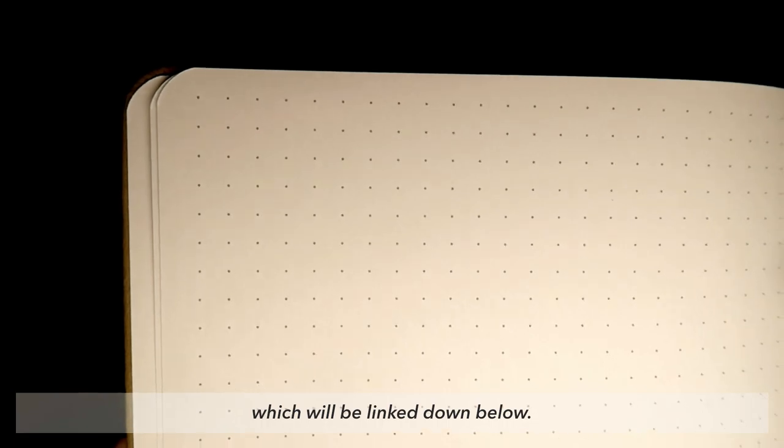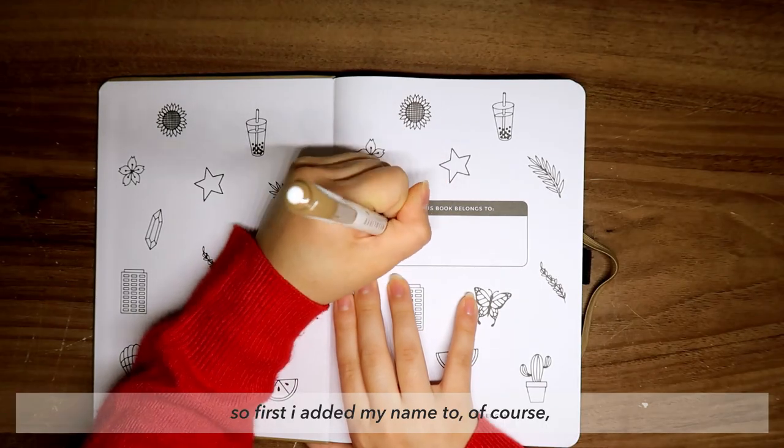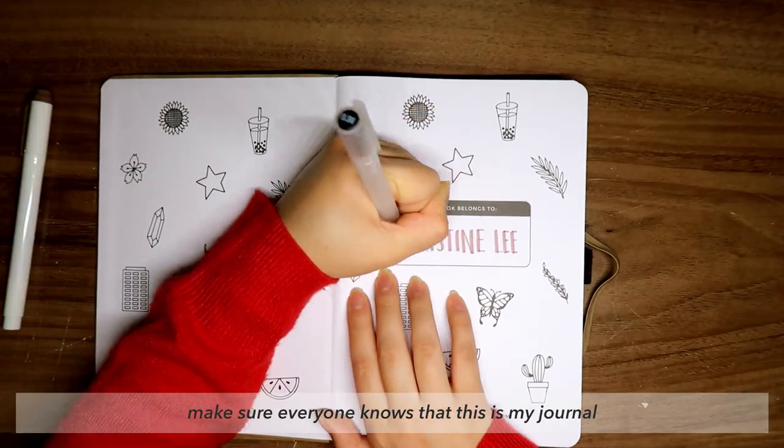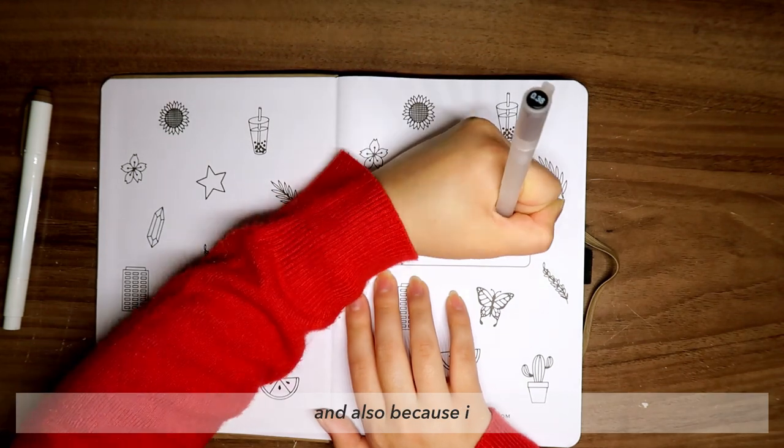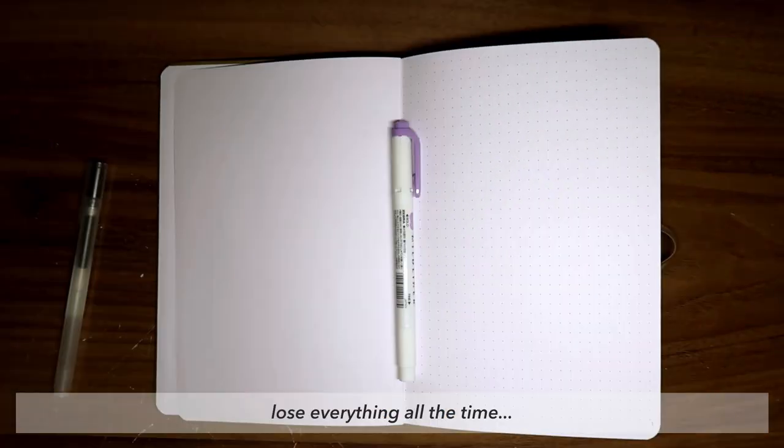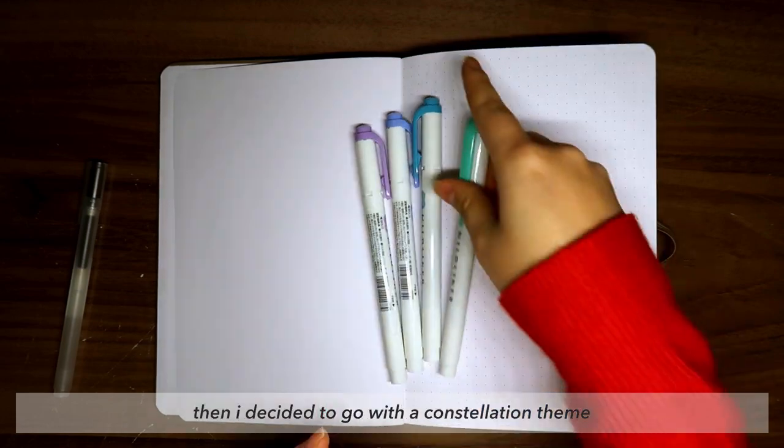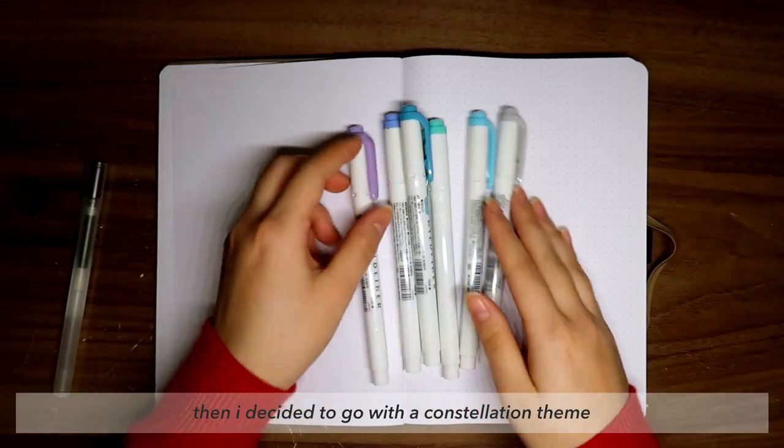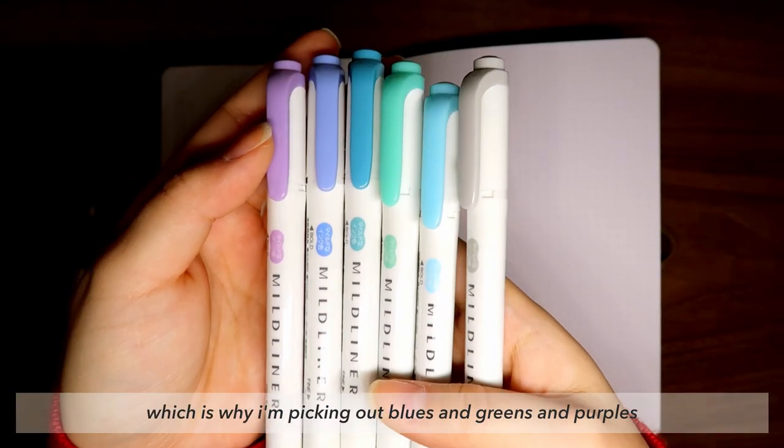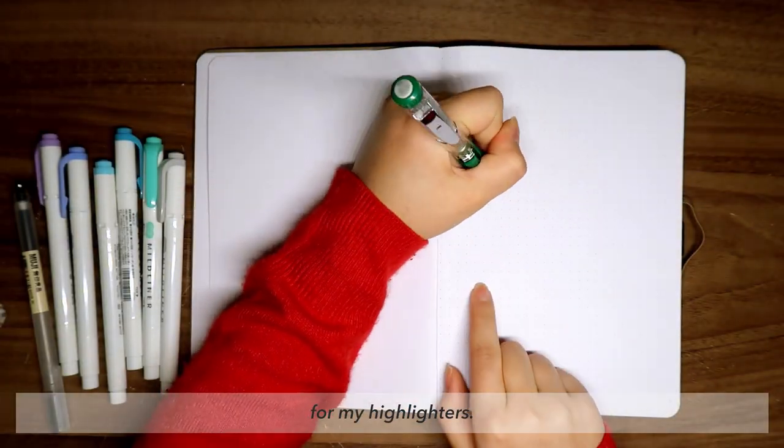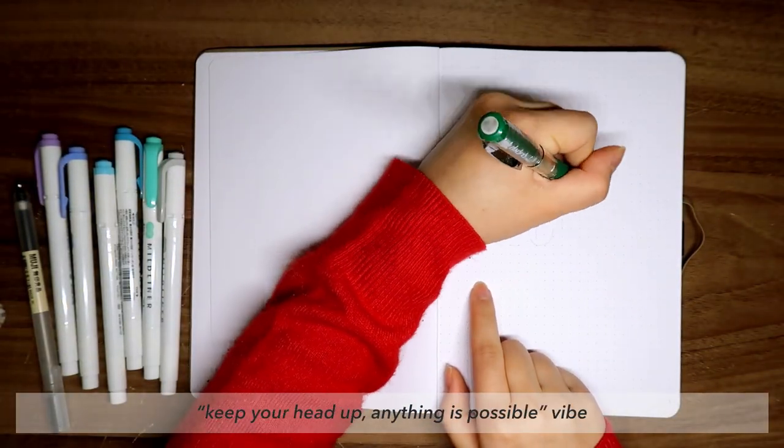So be sure to check out her store, Shop Amanda Rach Lee, which will be linked down below. Now without further ado, let's hop right in. First, I added my name to make sure everyone knows that this is my journal, and also because I lose everything all the time. Then I decided to go with a constellation theme for this whole setup, which is why I'm picking out blues and greens and purples for my highlighters.